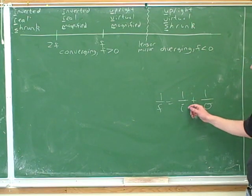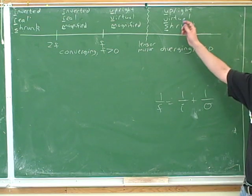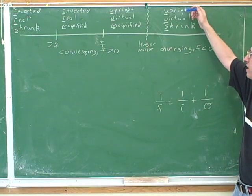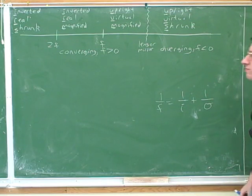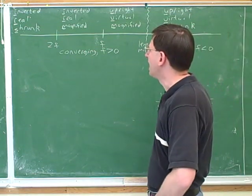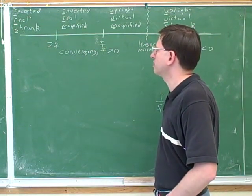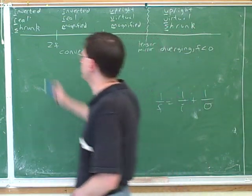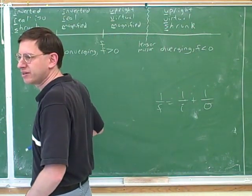So without even using the lens-mirror equation, we know that an object for a diverging device would always give an upright, virtual, and shrunk image. One thing I did in the table is I also put in all the sign conventions. For example, for real, I wrote down that i was positive.